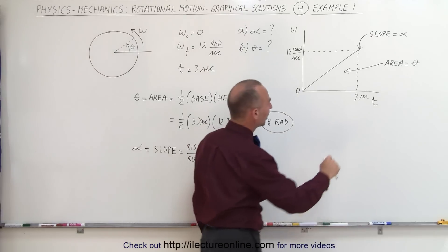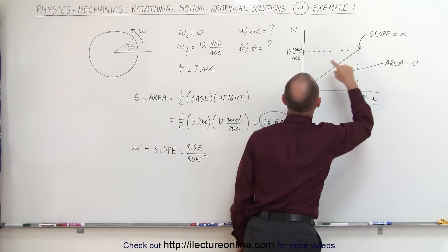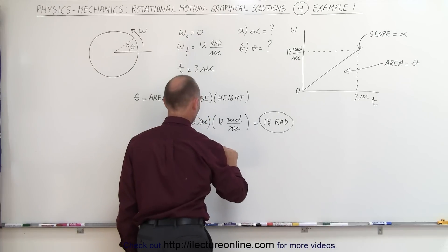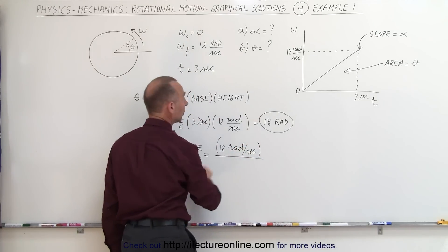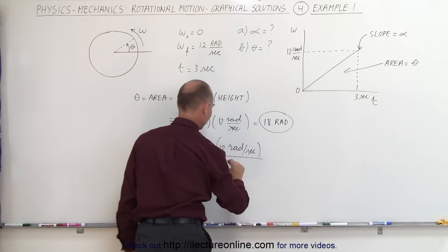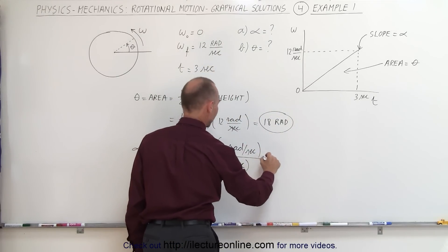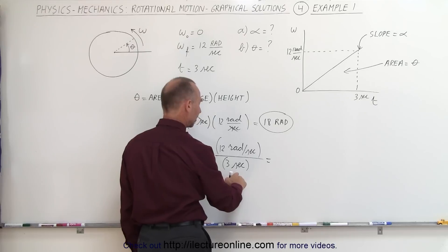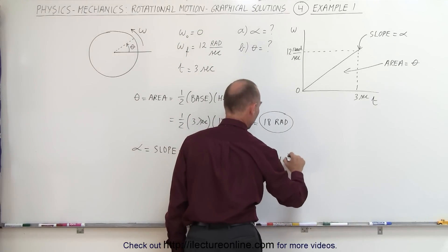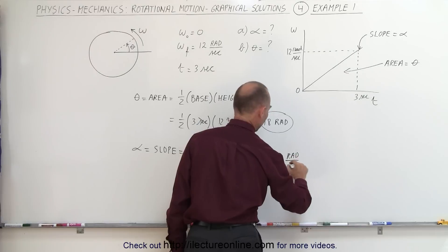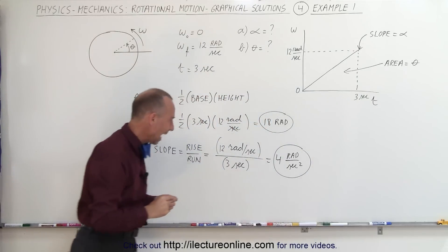And in this case the rise is the distance from there to there which is 12 radians per second. And we divide that by the run which is the distance from there to there which is 3 seconds. And we have radians per second per second is radians per second squared and 12 divided by 3 is 4 radians per second squared. And that's our answer for the angular acceleration.